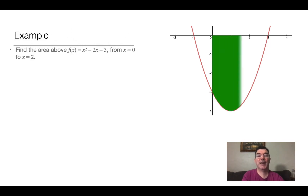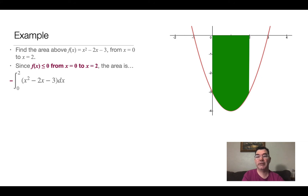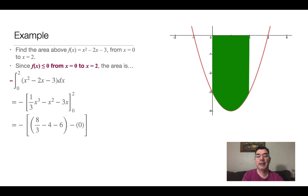Here's an example. Let's say I wanted to find the area above this curve — the curve is x squared minus 2x minus 3, going from x equals zero to x equals 2. You'll notice that red curve is completely below the x-axis between those two x values. So I'm simply going to take the opposite of the antiderivative of that function. First I find the antiderivative, which is one-third x cubed minus x squared minus 3x, plug in the endpoints, but then take the opposite sign. Even though the antiderivative from x equals zero to x equals two is negative 22 thirds, the area is positive 22 over 3.